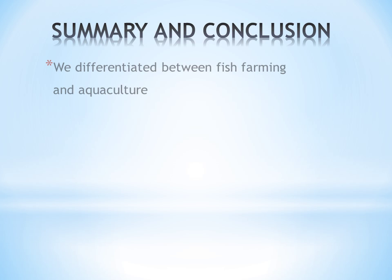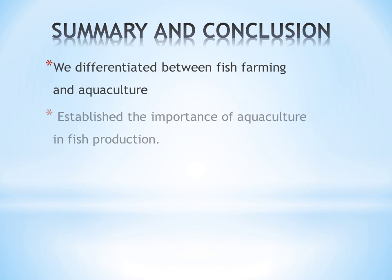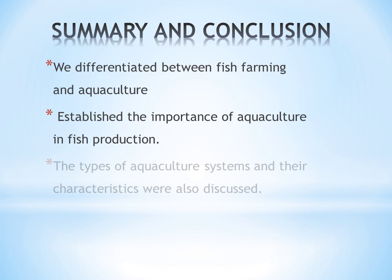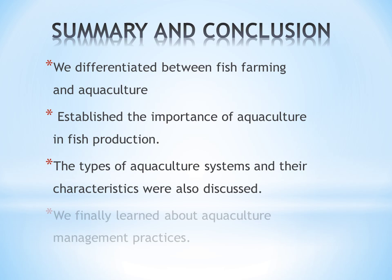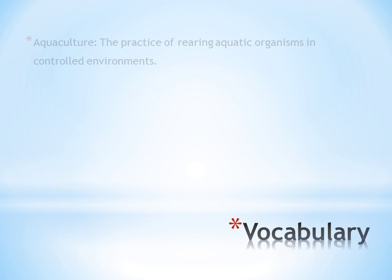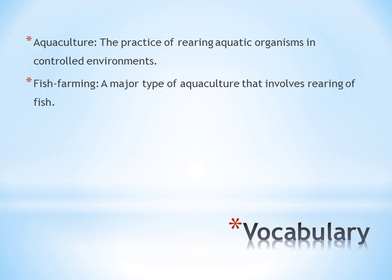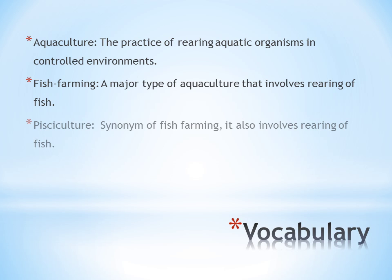At the end of this lesson, we have been able to differentiate between fish farming and aquaculture. We also established the importance of aquaculture in fish production. The types of aquaculture systems and their characteristics were discussed. Finally, we learned about aquaculture management practices. Here are some vocabulary terms which you will find interesting at the end of this lesson.